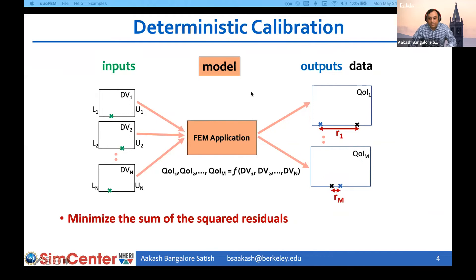In deterministic calibration, the inputs are also called design variables in Dakota terminology. We specify lower and upper bounds on the values of these inputs, and the problem is one of optimization: our objective is to minimize the sum of squared residuals, which is the difference between the values of the outputs and the data. This is the deterministic calibration problem.